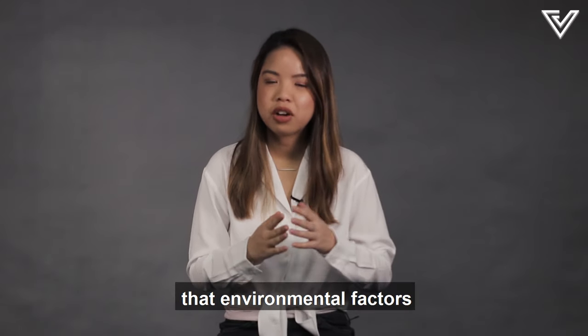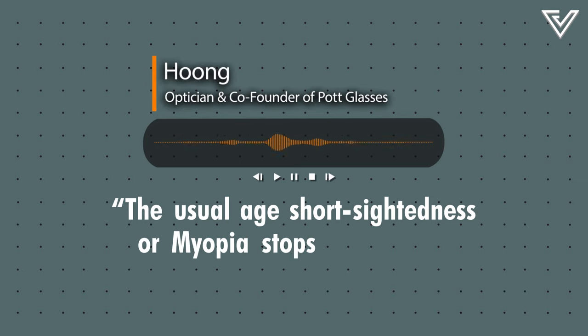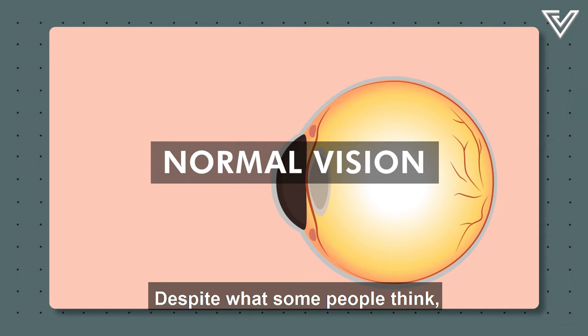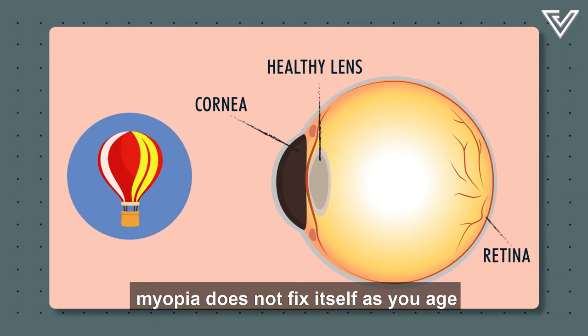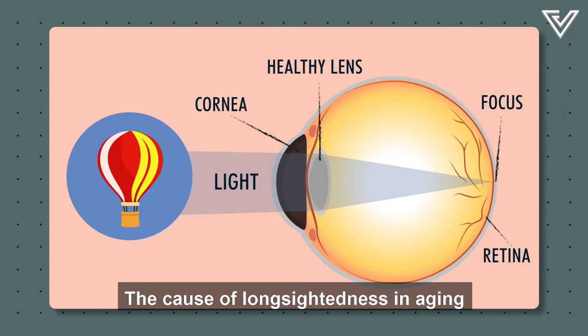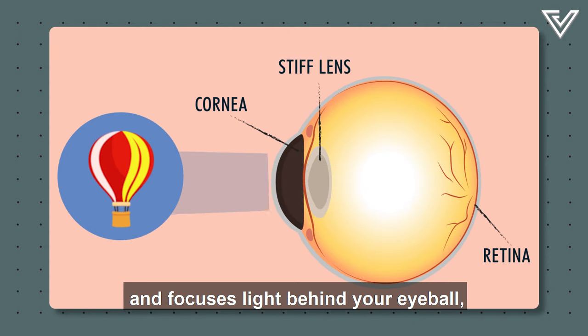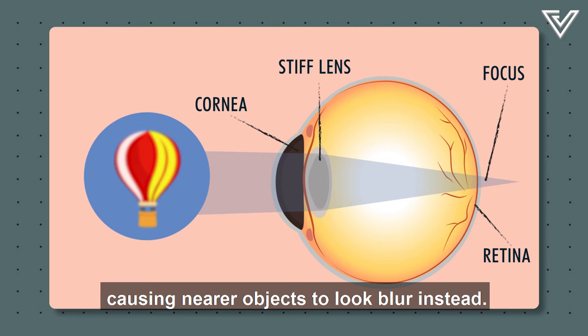The usual age short-sightedness, myopia stops progressing is around when your eyes are fully developed. Despite what some people think, myopia does not fix itself as you age because your eyeball shrinks. The cause of long-sightedness with aging happens because your lens becomes stiffer and focuses light behind your eyeball, causing nearer objects to look blurred instead.